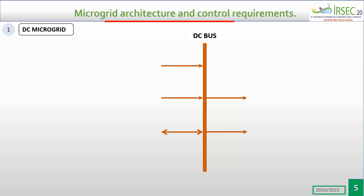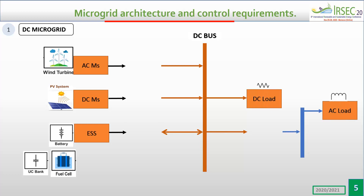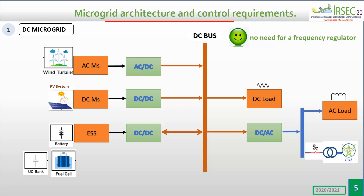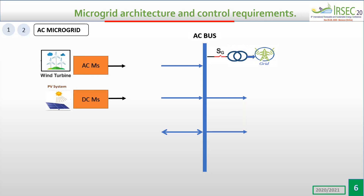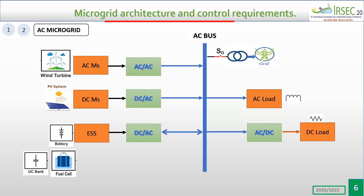In a DC microgrid, the renewable energy resources, energy storage systems, and loads are connected to the microgrid with appropriate power converters, and it can operate in grid-connected or islanding mode. In DC microgrid, we have a hierarchical control for voltage regulation across different layers.